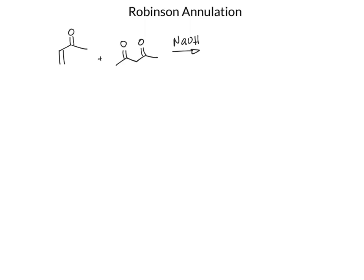Now that we've seen the aldol condensation reaction and the Michael addition, let's take a look at the Robinson annulation, which utilizes both of those mechanisms.